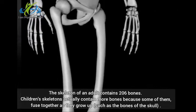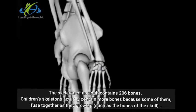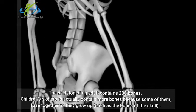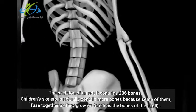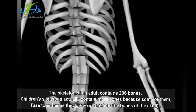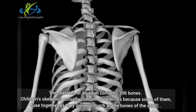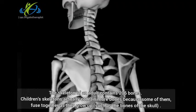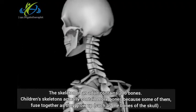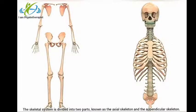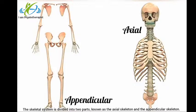Skeletons of children actually contain more bones because some of them fuse together as they grow up, such as the bones of the skull. The skeletal system is divided into two parts, known as the axial skeleton and the appendicular skeleton.